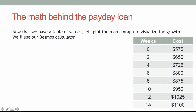Now that we have a nice table of values, let's look at them graphically. We can plot them on a graph to visualize the growth. We're going to use our Desmos calculator. We've got weeks as our x value — the independent variable — and cost as our y variable, looking for the relationship between how many weeks go by and how much the cost changes in response.